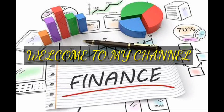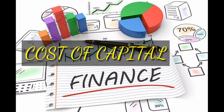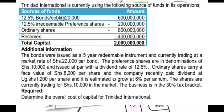Welcome to my channel. In this video we are going to look at an example about cost of capital. Cost of capital is a subtopic under financing, which is the third topic in financial management. The example says Trindad International is currently using the following sources of funds in its operations: bonds, unredeemable preference shares, ordinary shares, reserves, and the total capital is two billion. They want us to determine the overall cost of capital for Trindad International.